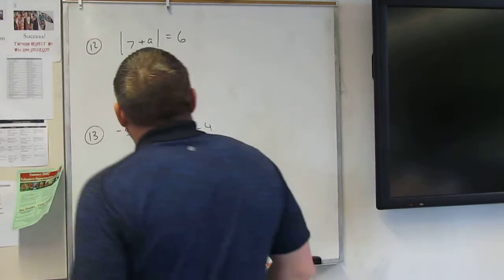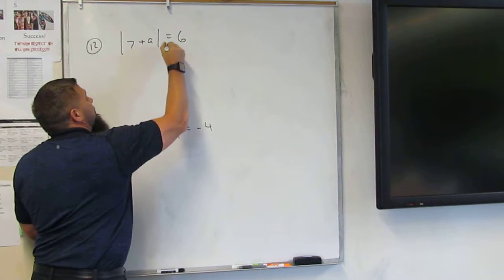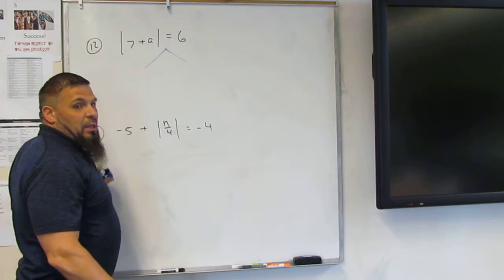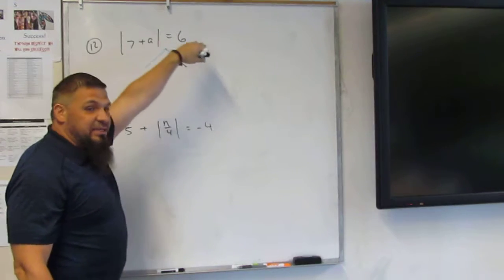All right, so here we go. Remember, absolute values go two directions. Okay, because if this were negative 6, it would just be 6, right?